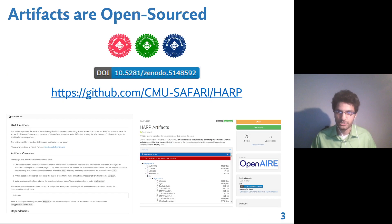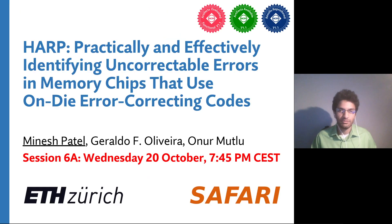HARP is open-sourced and artifact-evaluated. All necessary source code to reproduce our studies is available on GitHub and Zenodo. We invite everybody to attend our talk in session 6A on 20th October.